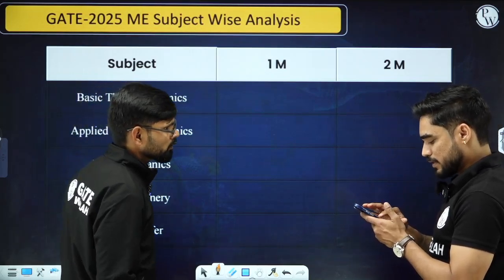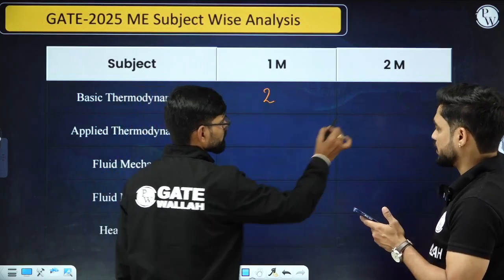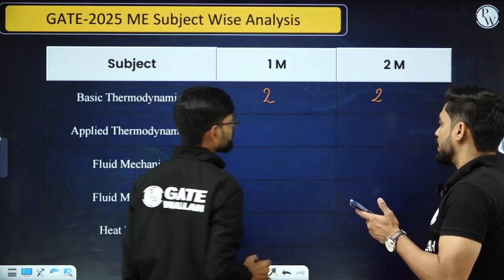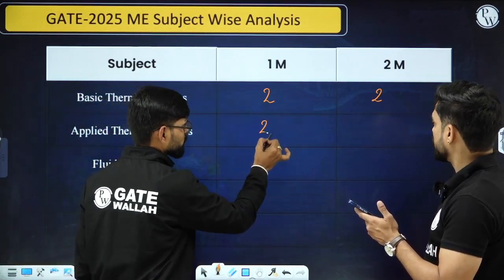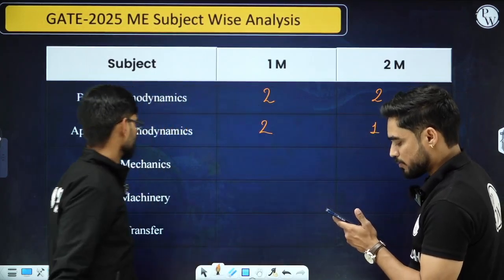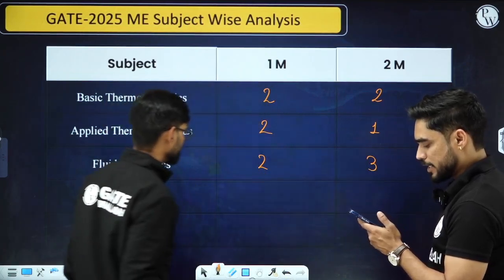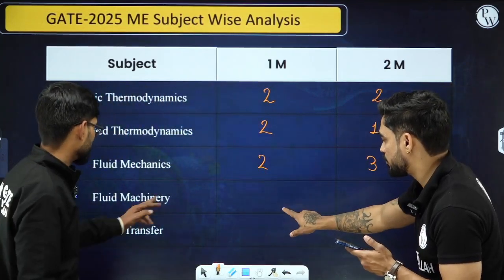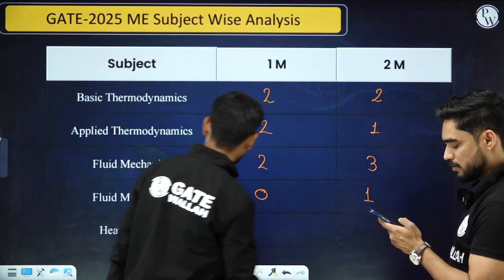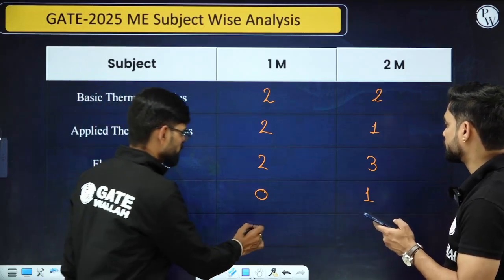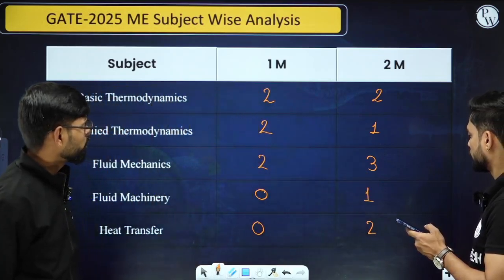For basic thermodynamics, there were two one-mark and two two-mark questions. Applied thermodynamics had two one-mark and one two-mark question. Fluid mechanics had two one-mark and three two-mark questions. Fluid machinery had zero one-mark and three two-mark questions. Heat transfer had zero one-mark and two two-mark questions. Counting total, that comes to around 24 marks from the thermal and fluid area.